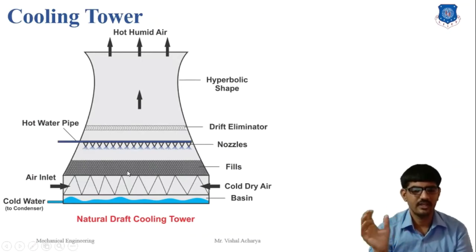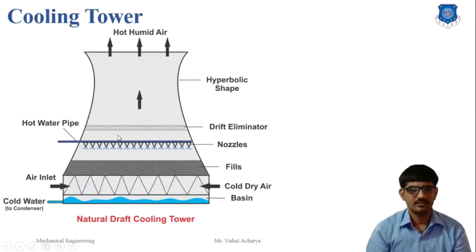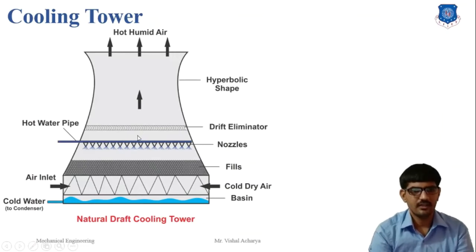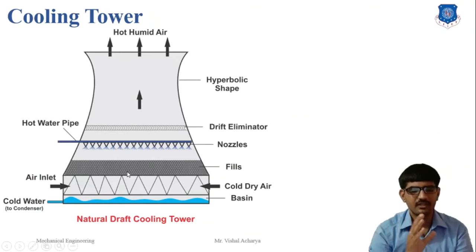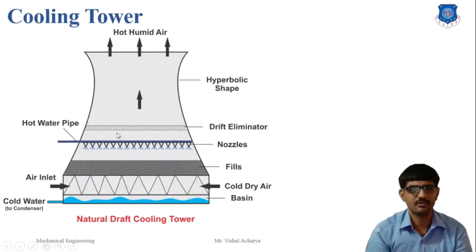Hot air and evaporated water escape from the cooling tower, but we have arranged a drift eliminator. The drift eliminator is used to help cool the water down and convert it into cold water. The drift eliminator allows air to exit from the cooling tower while trying to prevent water from escaping. The main function of the drift eliminator is to minimize the loss of water in the cooling tower.